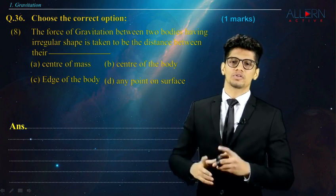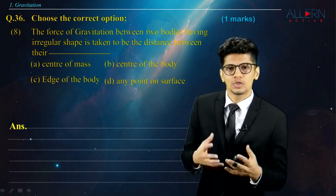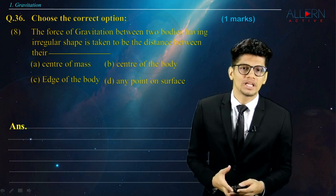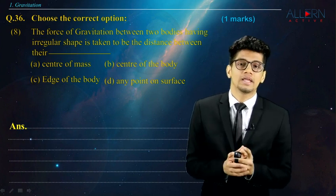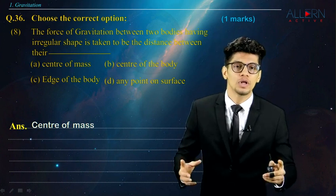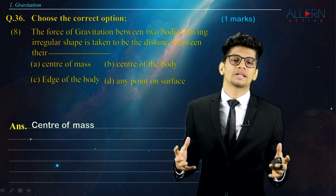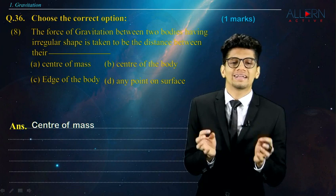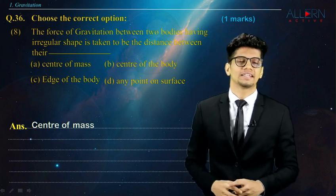Let's move on to the next question. The force of gravitation between two bodies having irregular shape is taken by the distance between their center of mass. Because we know that the entire mass of an object is assumed to be concentrated at the center, which is called as the center of mass.